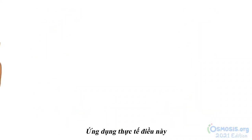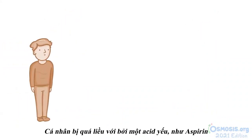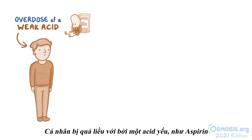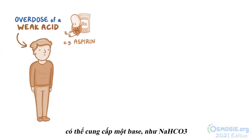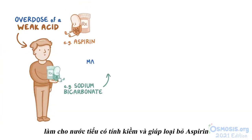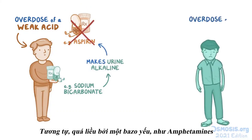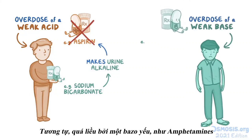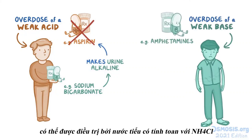The practical application of this is that an individual presenting with an overdose of a weak acid, like aspirin, can be given a base, like sodium bicarbonate, which makes the urine alkaline and helps eliminate aspirin. Likewise, overdose of a weak base, like amphetamines, can be treated by acidifying the urine with ammonium chloride.